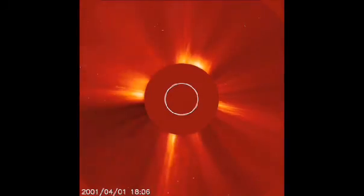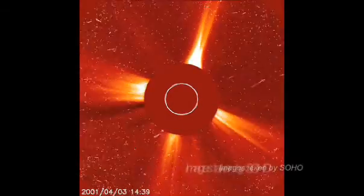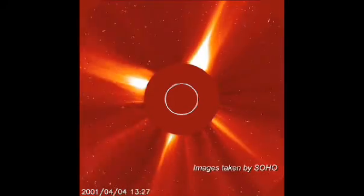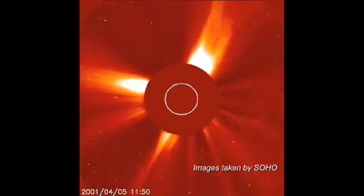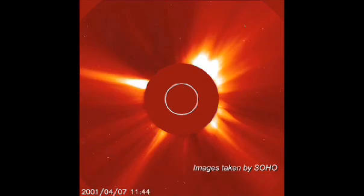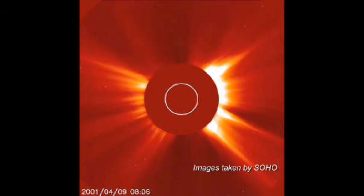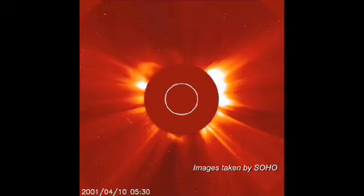To image the solar corona, one instrument onboard SOHO uses a coronagraph to make an artificial eclipse to mask the dazzlingly bright disk of the Sun. Why the gas in the Sun's corona is so hot is one of the mysteries that SOHO is helping to solve.